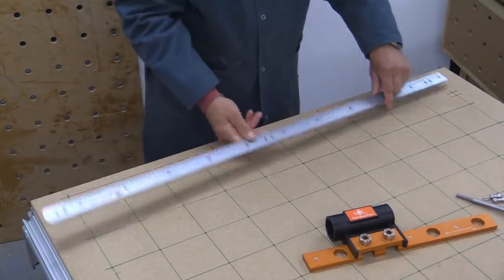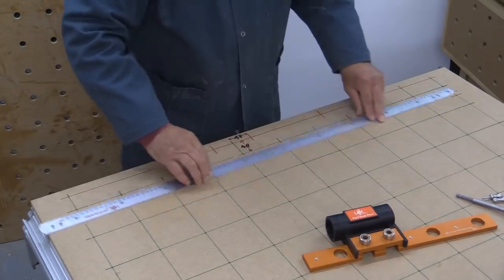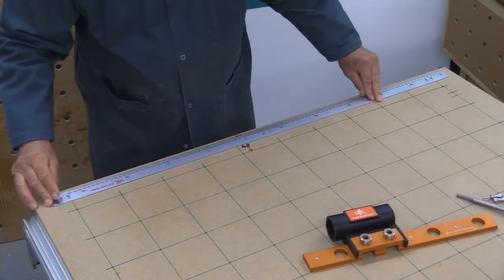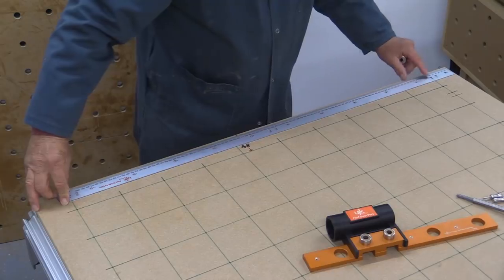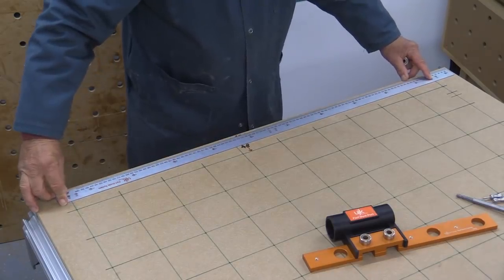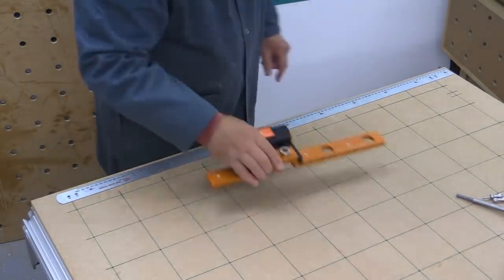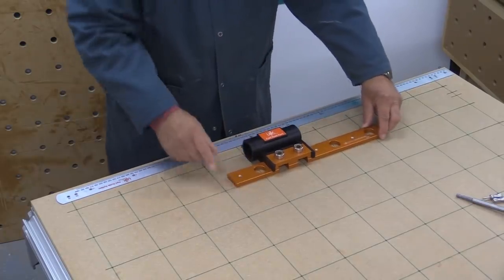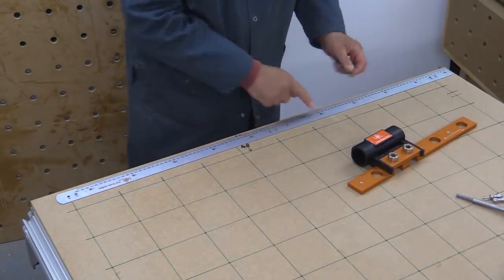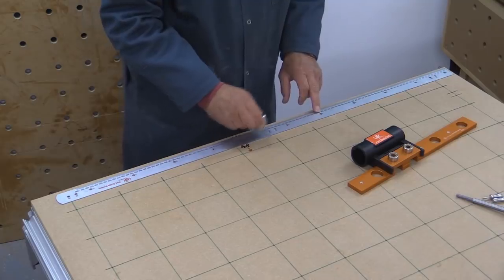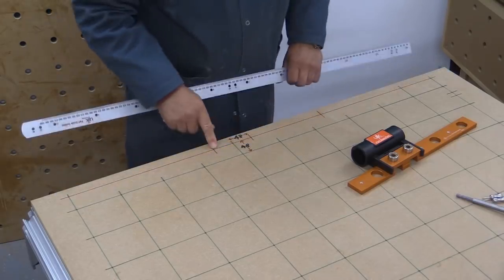I can then, I want to be over by 48, so I use the 48 at this end, and the 48 at that end, and when that's fixed in place, I can then drill the three holes I need. One here, one here, and one here. So, one, two, and three. And I've done those already.